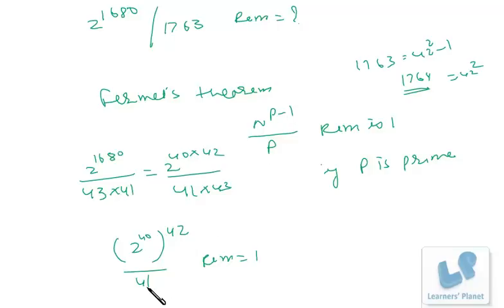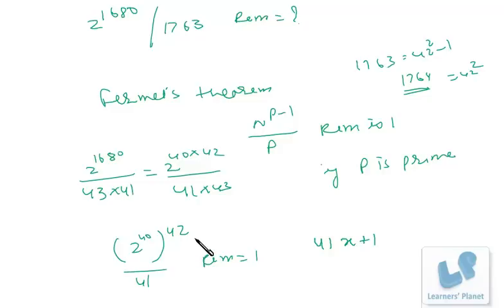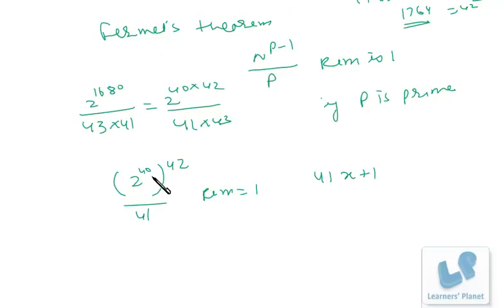So 41 is a prime number, so 2 raised to 40 if it is divided by 41, remainder will be 1. So that 1 raised to 42, final remainder is 1. That means this number is in 41x plus 1 format.